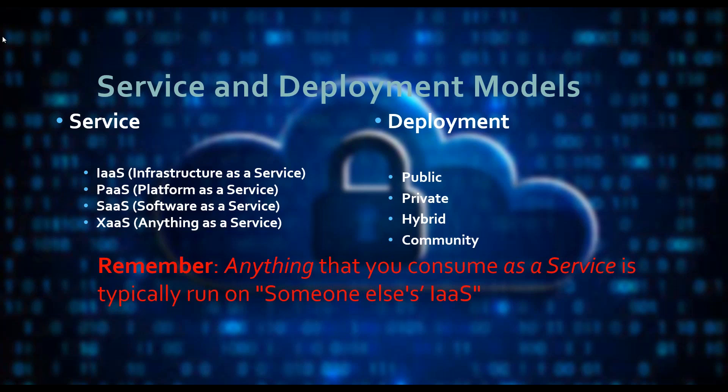Then you've got your deployment methods. For some of these you know what the deployment model will be; in other cases maybe you have a choice. For example, with infrastructure as a service, that can be a public deployment — meaning it's sitting in AWS, Azure, or Google Cloud — or it could be a private model sitting on your own infrastructure. What you're seeing a lot more of is a hybrid environment. More often than not you'll see a slow adoption to the cloud where you start building express routes and tunnels from what you have on-prem to what's out in the cloud.